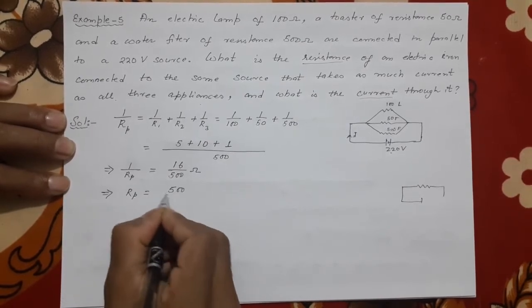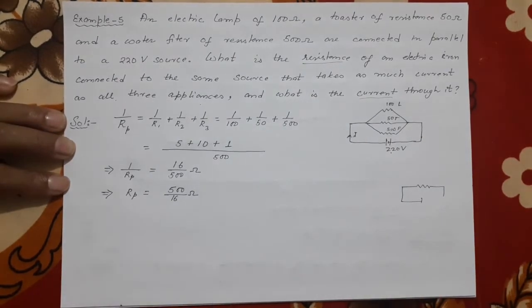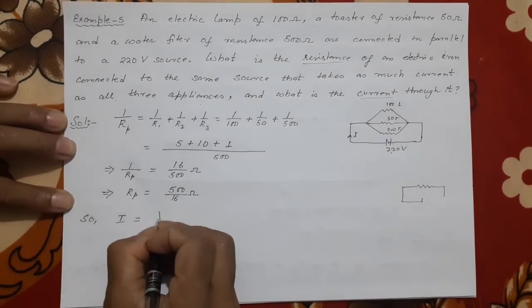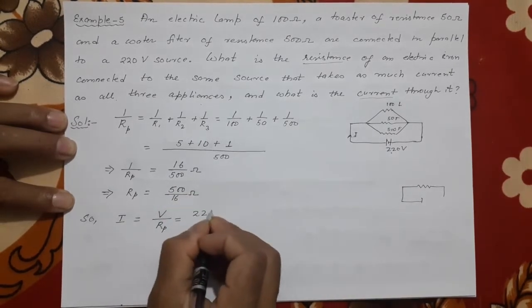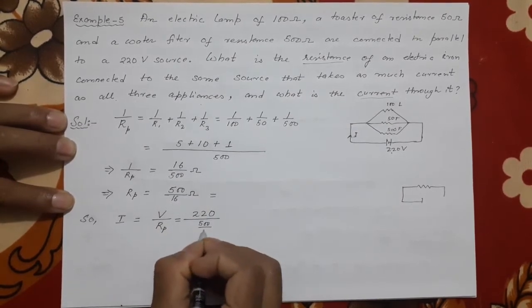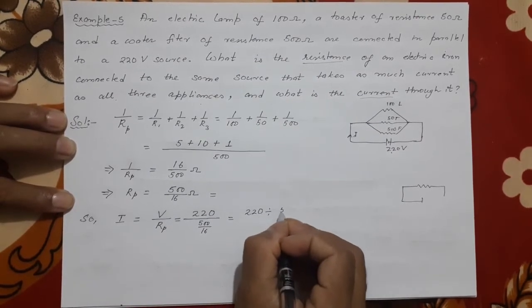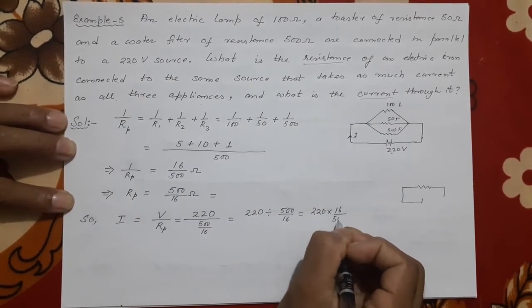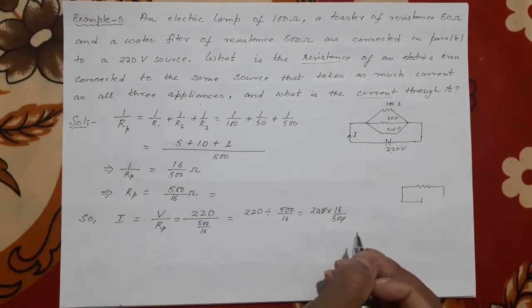In place of all these three, one resistance will be this much. Now, so current will be what? V/Rp. What is this V? V is how much? 220 divided by what is this? 500/16. Equal to 220 divided by 500/16. That means 220 × 16/500.